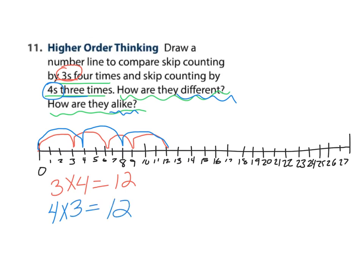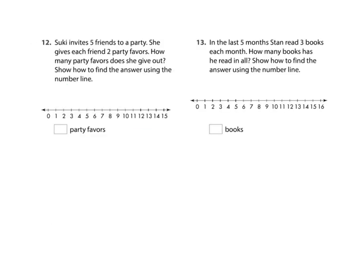Suki invites five friends to a party. She gives each friend two party favors. How many party favors does she give out? Show how to find the answer using the number line. So she has five friends and they each get two, so we're gonna jump five times and each jump will be two. So here's one, two, three, four, five. How many party favors does she give out? She gives out five party favors.